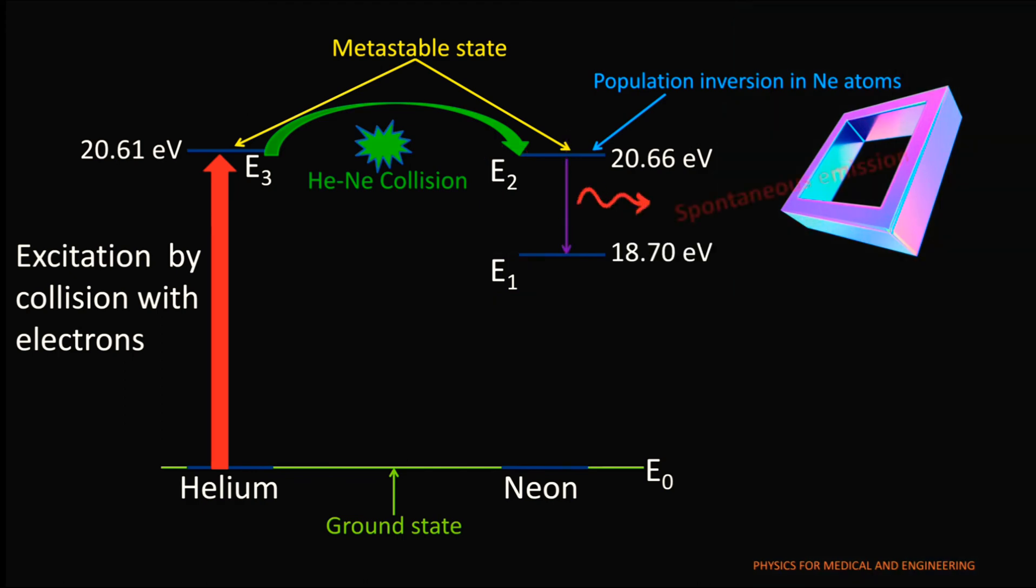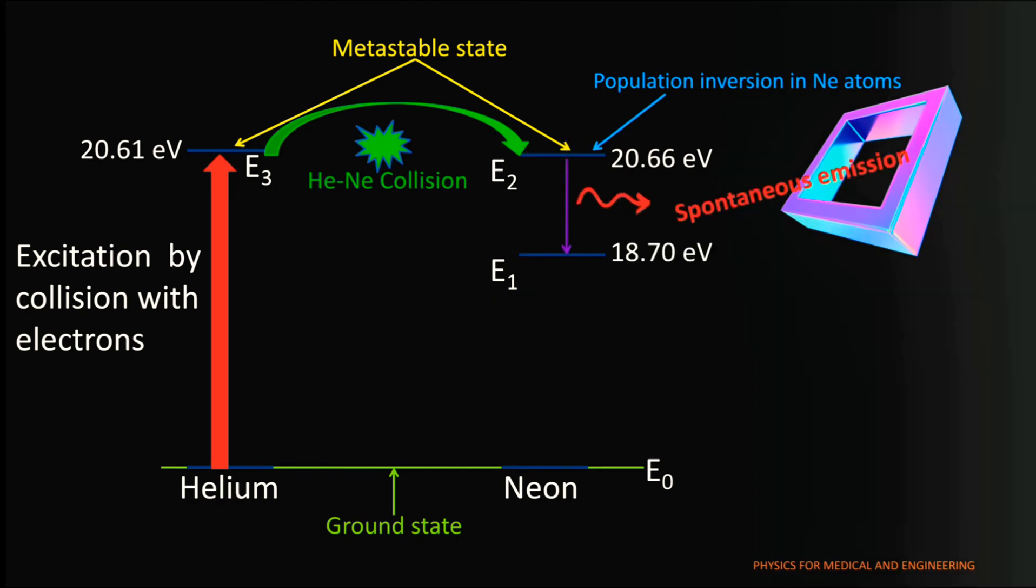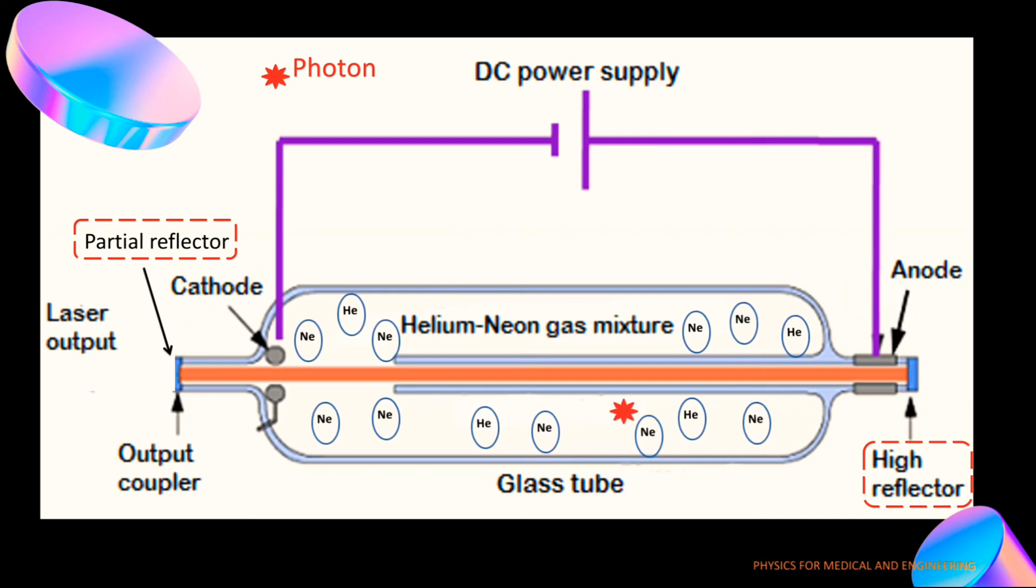Now suppose that a single photon is spontaneously emitted as a neon atom transfers from state E2 to state E1. This photon traveling through the mixture of the gas is reflected back and forth by the reflecting mirrors until it stimulates an excited neon atom and causes it to emit a fresh photon which is in phase with the stimulating photon.